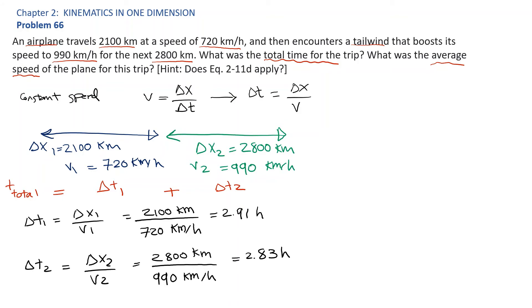So the total time is equal to delta t1 plus delta t2, which is equal to 2.91 plus 2.83, or 5.74 hours.